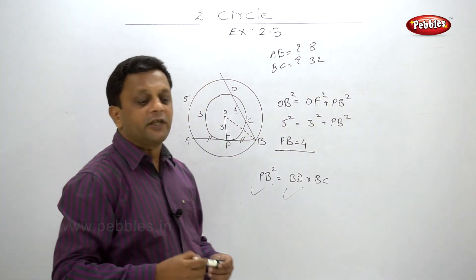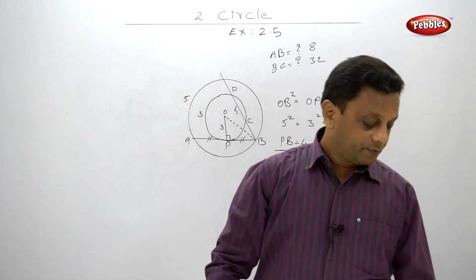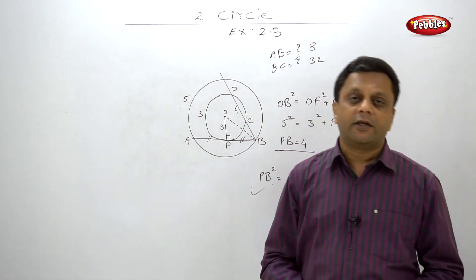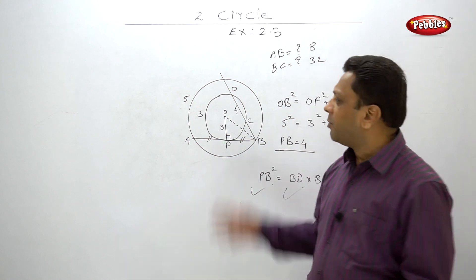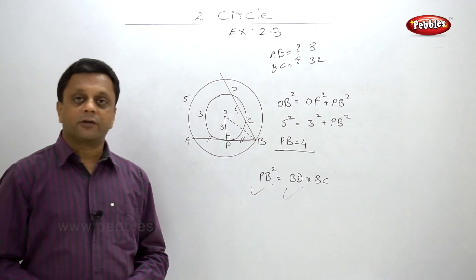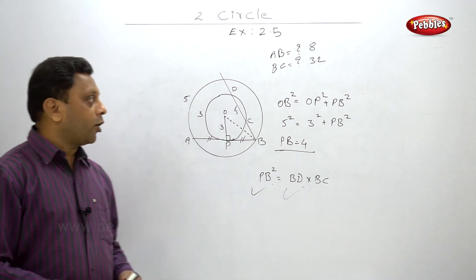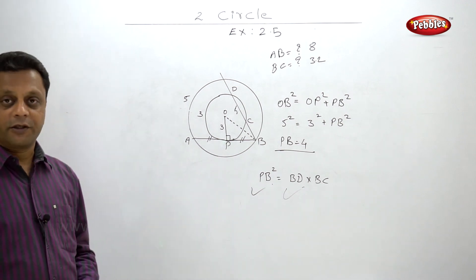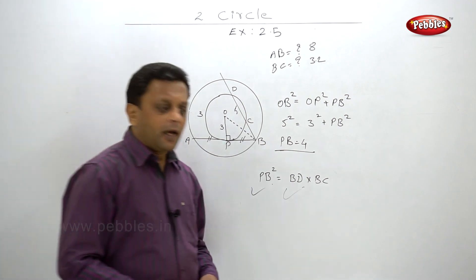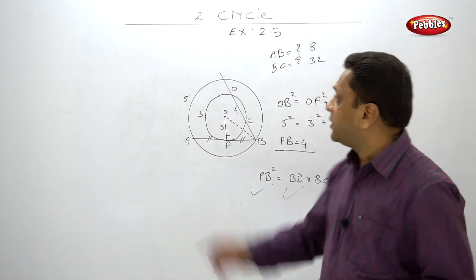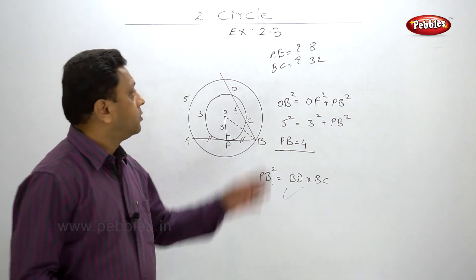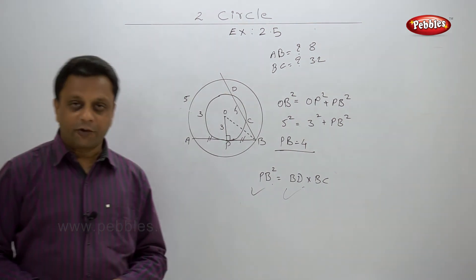No unit is given for the radii, so don't write centimeters — write 'unit' or leave it out. Read the problem carefully and then solve it. This was a very short exercise. Here we finish exercise 2.5 and now we can move to problem set 2. Thank you very much.